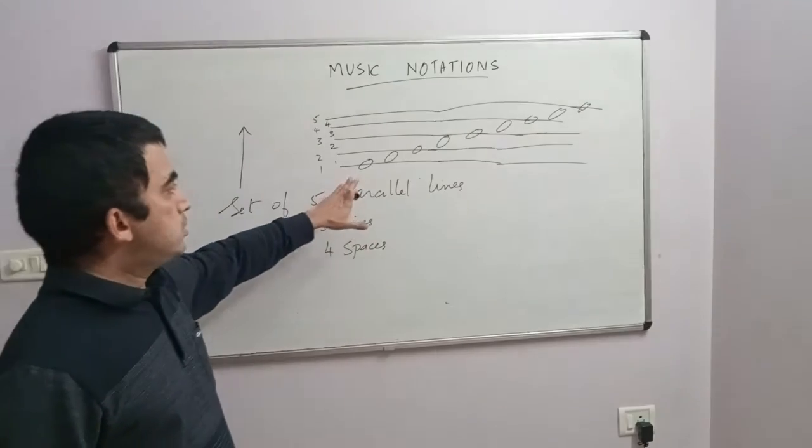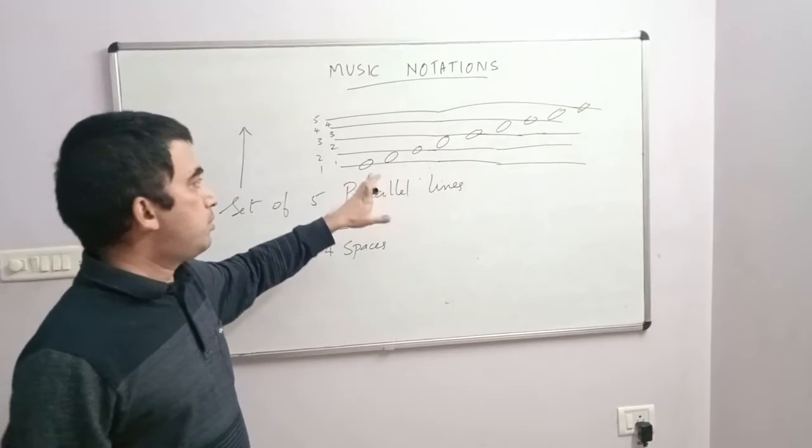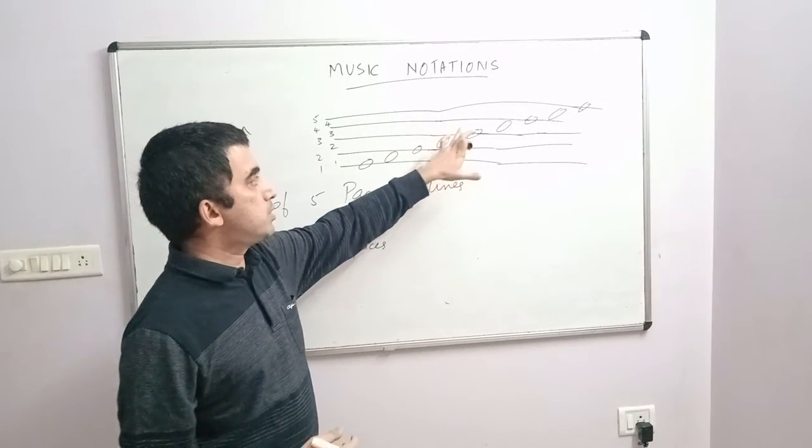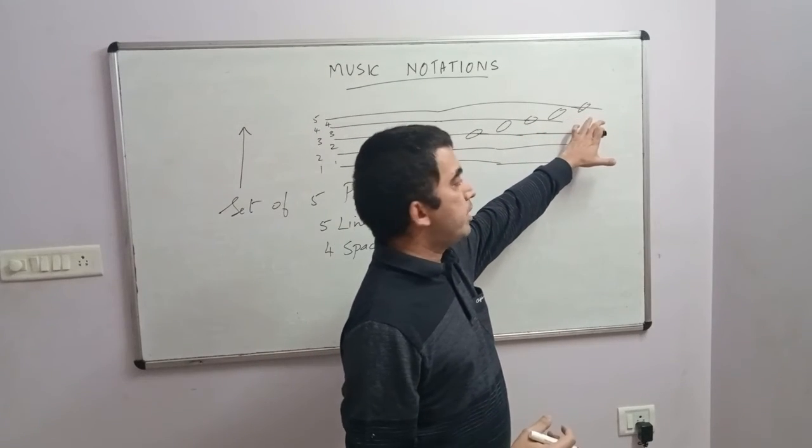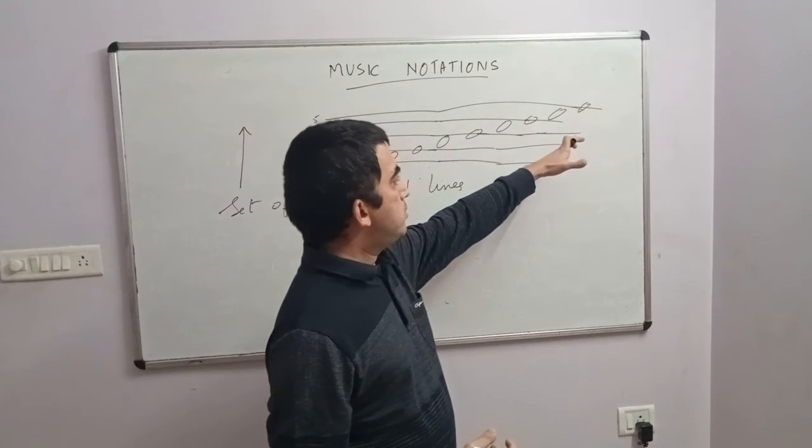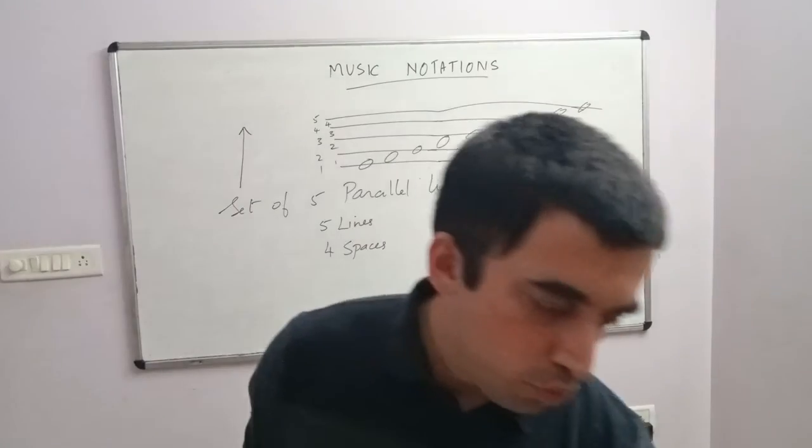has to be very clear, because there's nothing in between. In the notations it will be first line, first space, second line, second space, third line, third space, fourth line, fourth space, fifth line. And that is the ascending order. So if you have a keyboard,